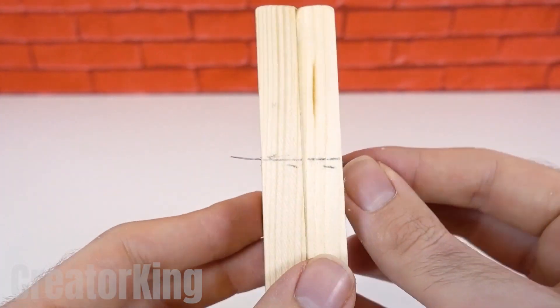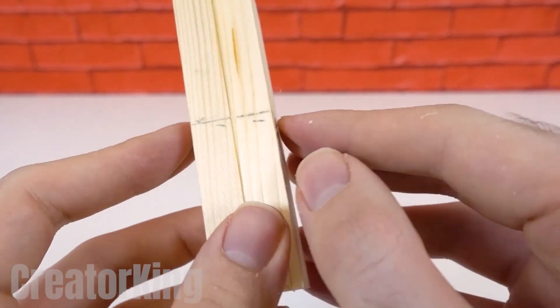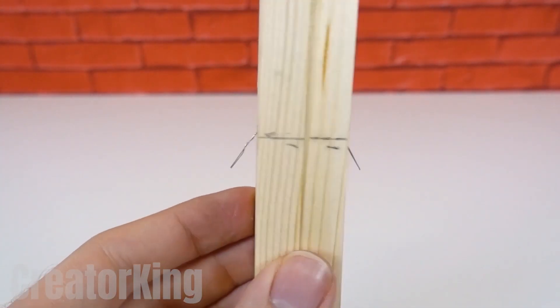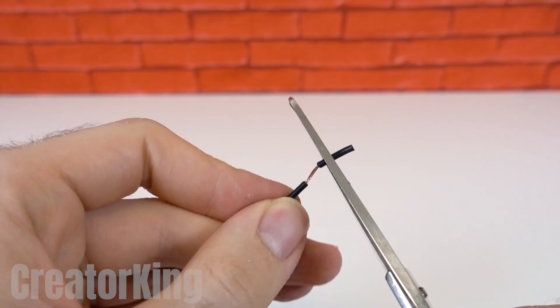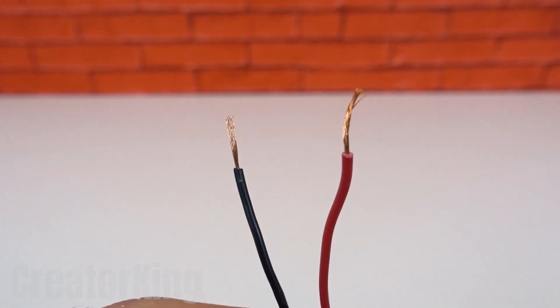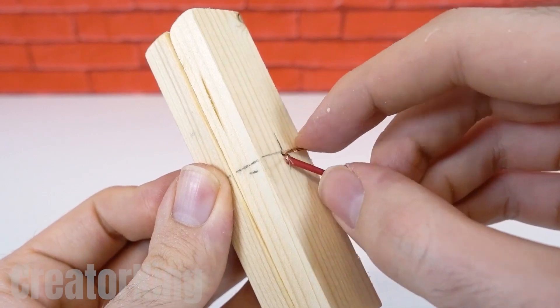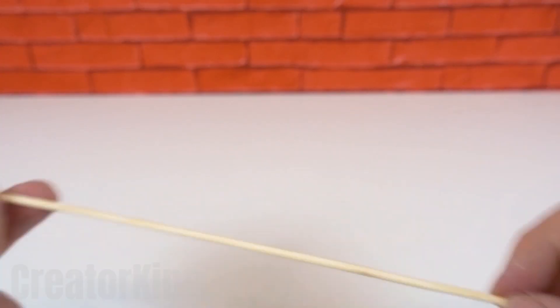Once twisted, insert it through the smaller hole, making sure that it shows through on both sides and bend the ends downwards. Strip both red and black copper wires with scissors. Once you have both, connect these tiny exposed wires to each end of the twisted wire.